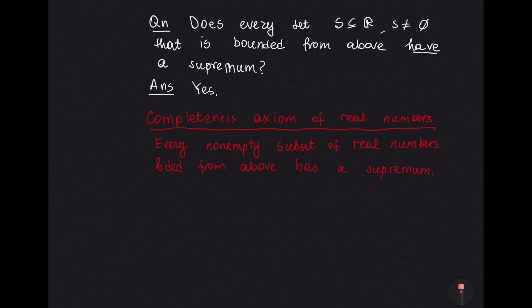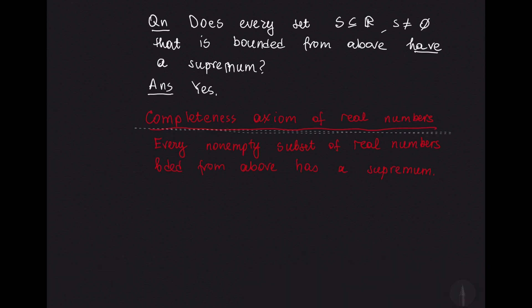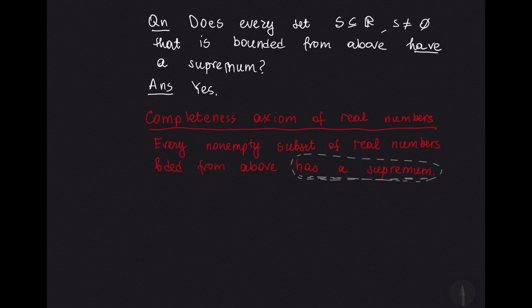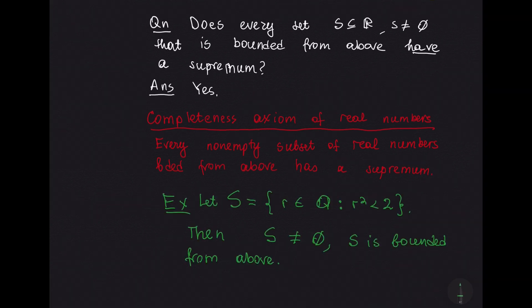You may ask: does every non-empty set S that is bounded from above actually have a supremum? The answer is yes, because of the completeness axiom of real numbers. The completeness axiom tells us that every non-empty subset of real numbers that is bounded from above indeed has a supremum. This is a very beautiful property of the real numbers that we rely on.